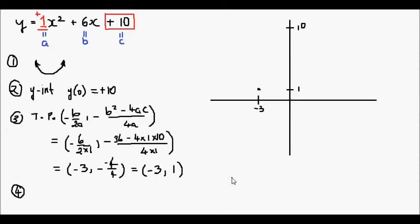And the fourth and final part is to find the x-intercepts. Well, I know straight away from looking at this, we're not actually going to get any x-intercepts at all. Well, first of all, visually, the y-coordinate of our turning point is positive 1.